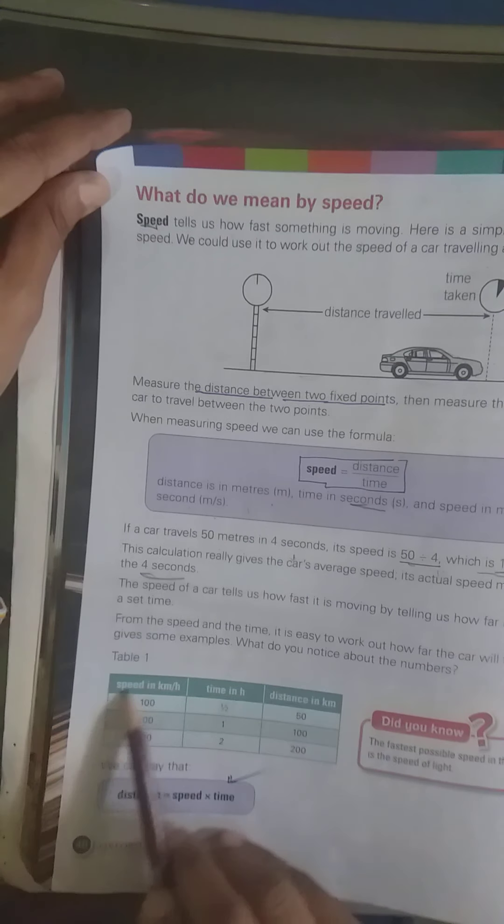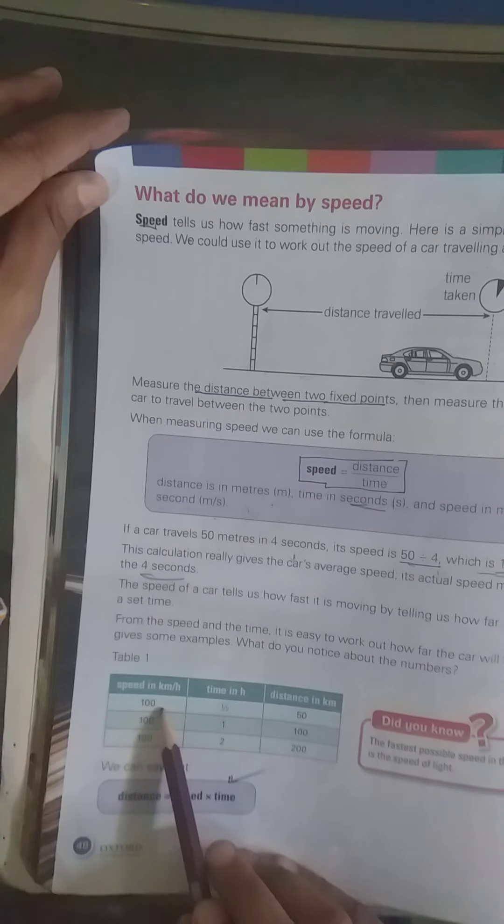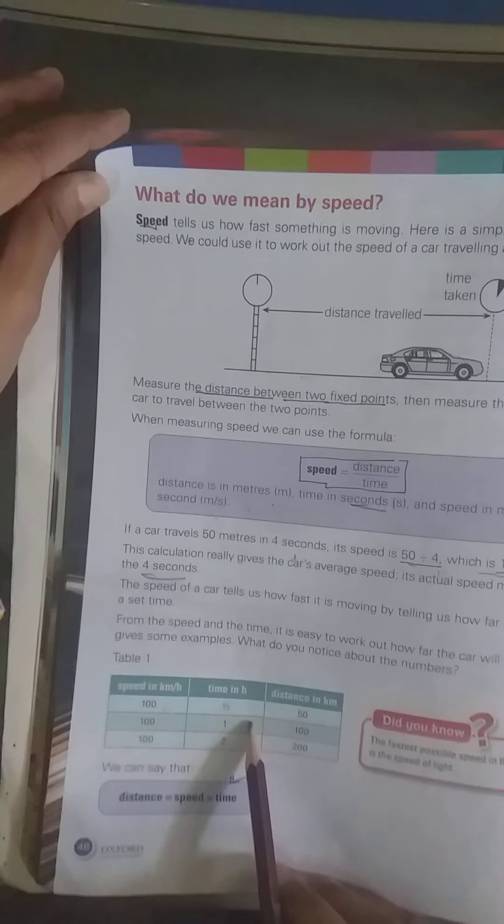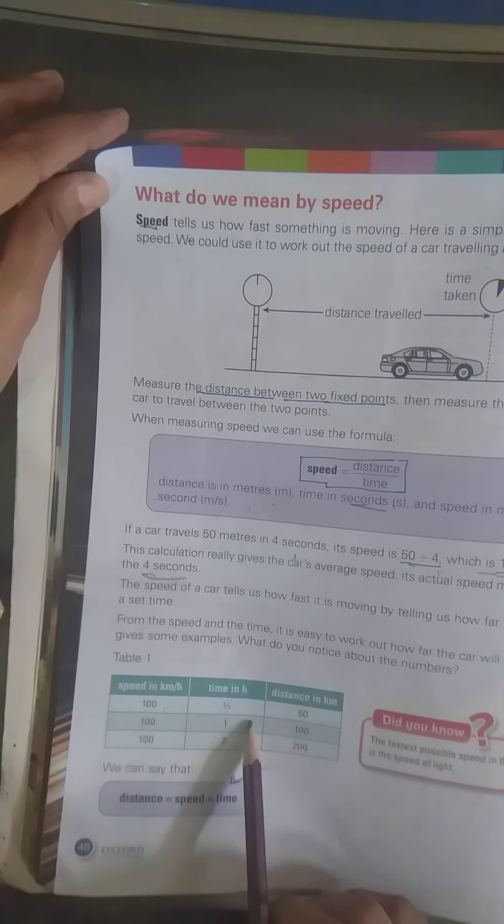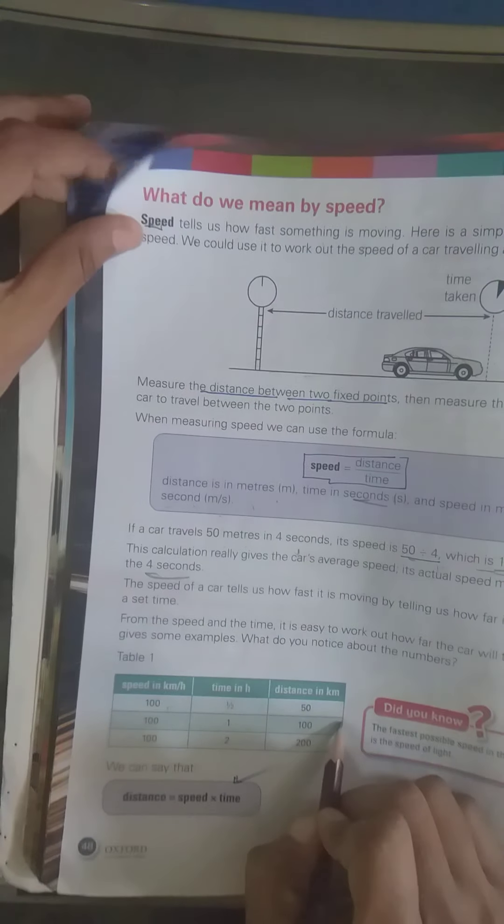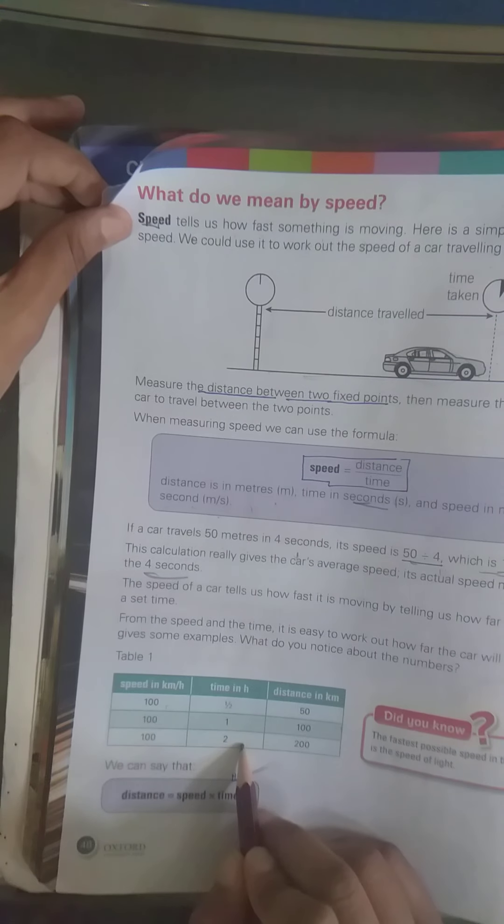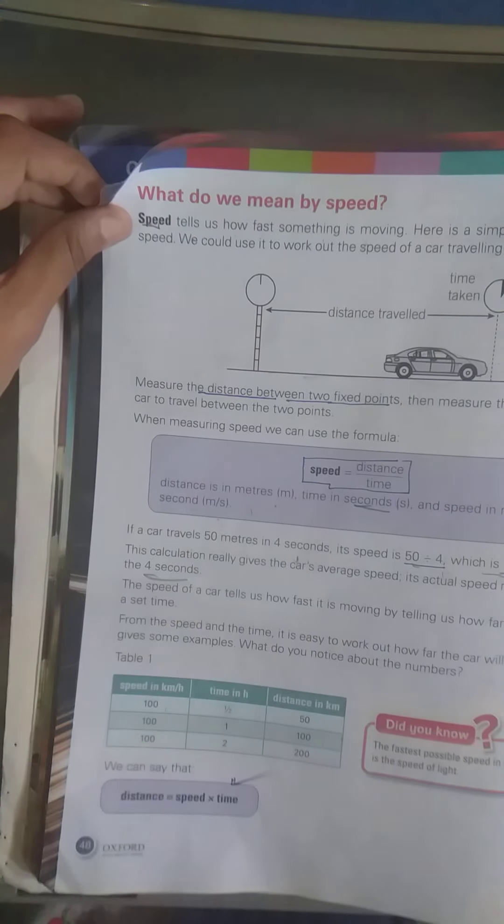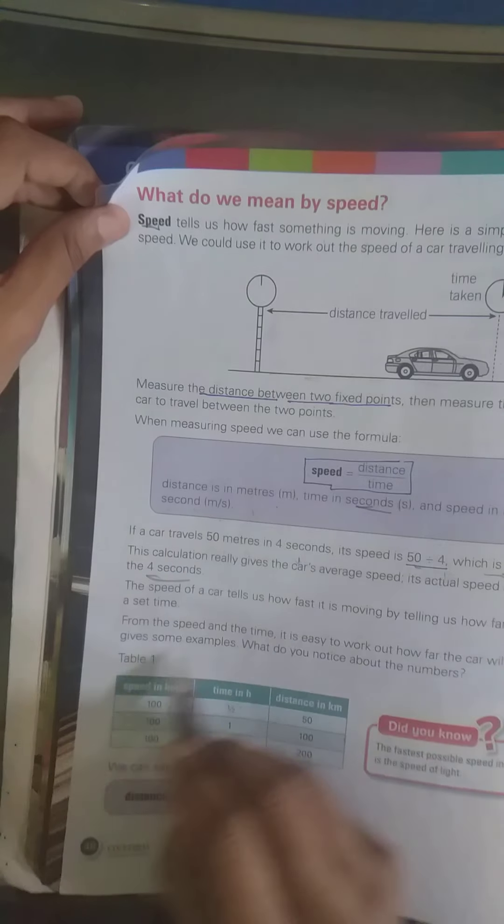Abh humare paas yeh table hai joh kya karthi hai. Yeh table mein hap ke baas hai 100 km hai, to time isko laghe ga one by two, or distance kitna hooga 50 meters. 100 ke liye uske baas mazolab yeh is tarha karke hum joh hai wo kya karthi hai speed ko calculate karthi hai.